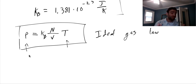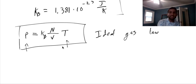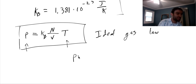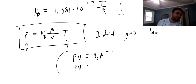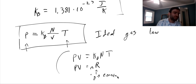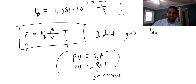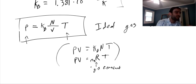Maybe you saw the ideal gas law in chemistry class, where it might have been written as P times V equals k_B times the number of particles times T. Or equivalently, pressure times volume equals the number of moles of gas times the gas constant R times temperature. It's all the same equation — it just depends on whether you count the number of particles or the number of moles of gas, and which constants you use. That is how pressure in gases works.